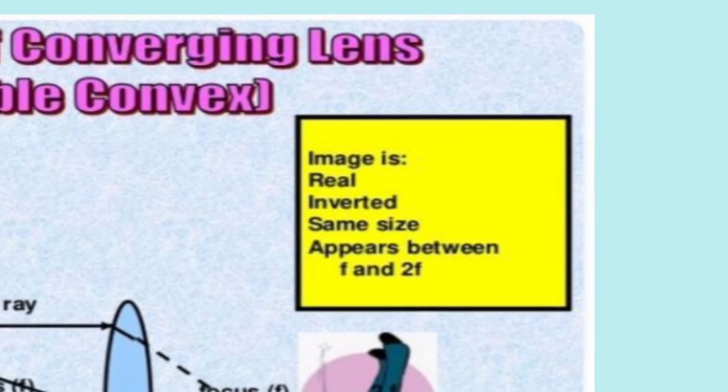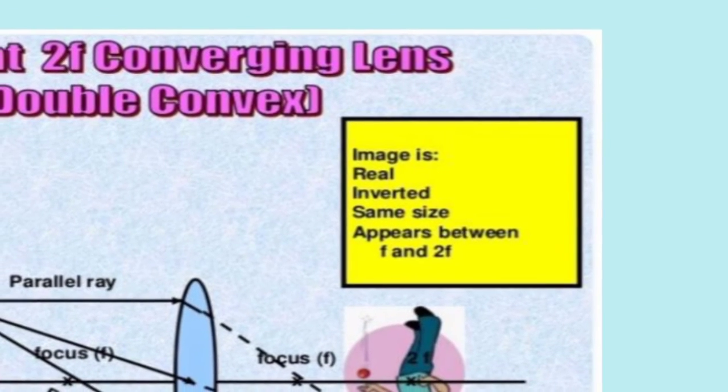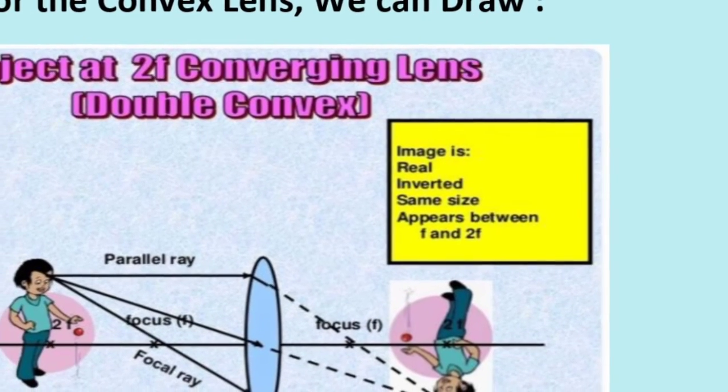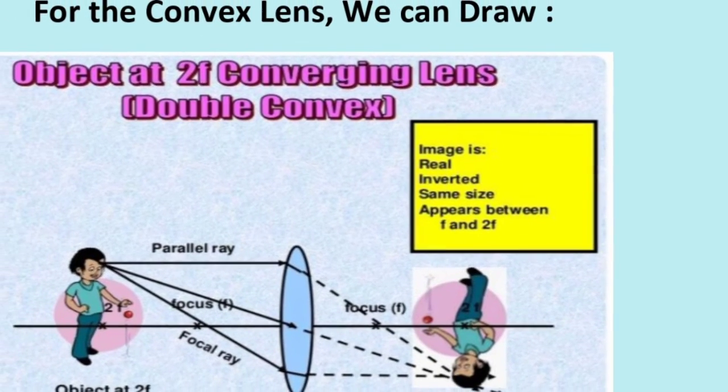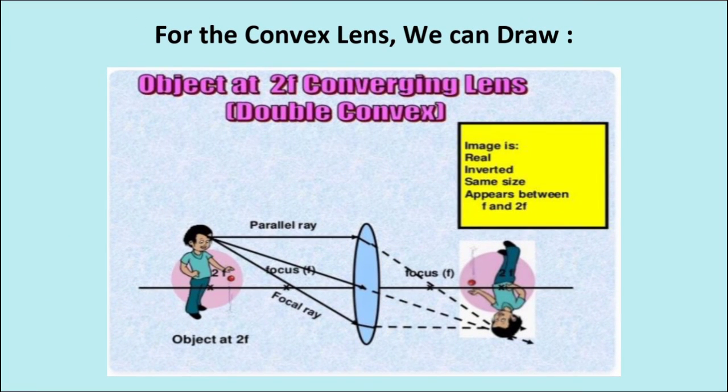What if the object is at the double focal point? The image is real, inverted, and the same size. It will appear at the double focal point on the other side.